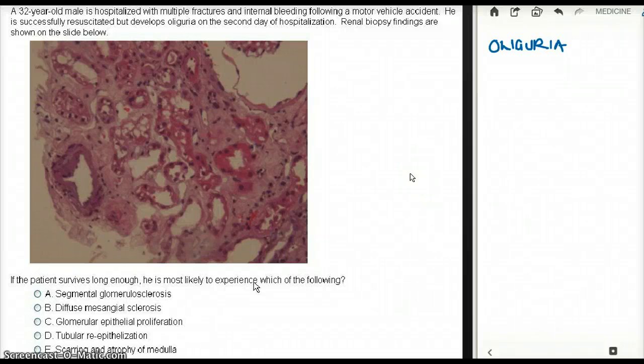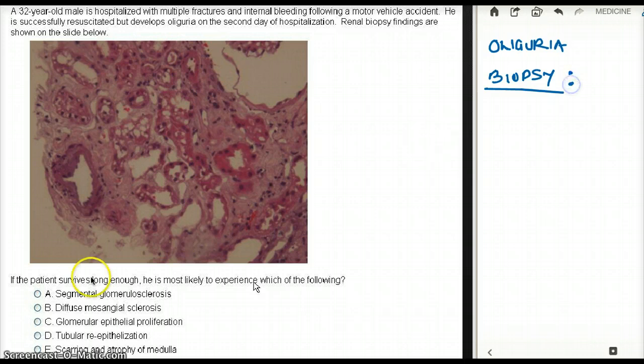This question deals with a 32-year-old male hospitalized with multiple fractures and internal bleeding following a motor vehicle accident. He is successfully resuscitated but develops oliguria on the second day of hospitalization. Renal biopsy findings are shown on the slide below. If the patient survives long enough, he is most likely to experience which of the following?